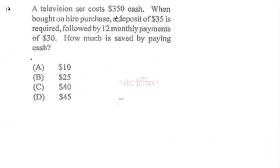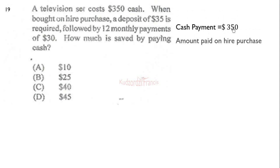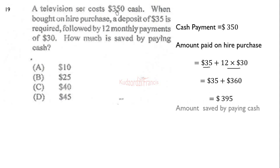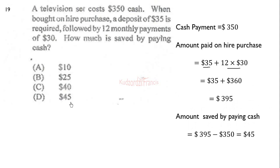Question 19: A television set costs 350 dollars cash. When bought on hire purchase, a deposit of 35 dollars is required followed by 12 monthly installment payments of 30 dollars. How much is saved by paying cash? The hire purchase total is 35 deposit plus 12 times 30, which is 360, giving 395 dollars. Taking 395 minus 350 gives a saving of 45 dollars.